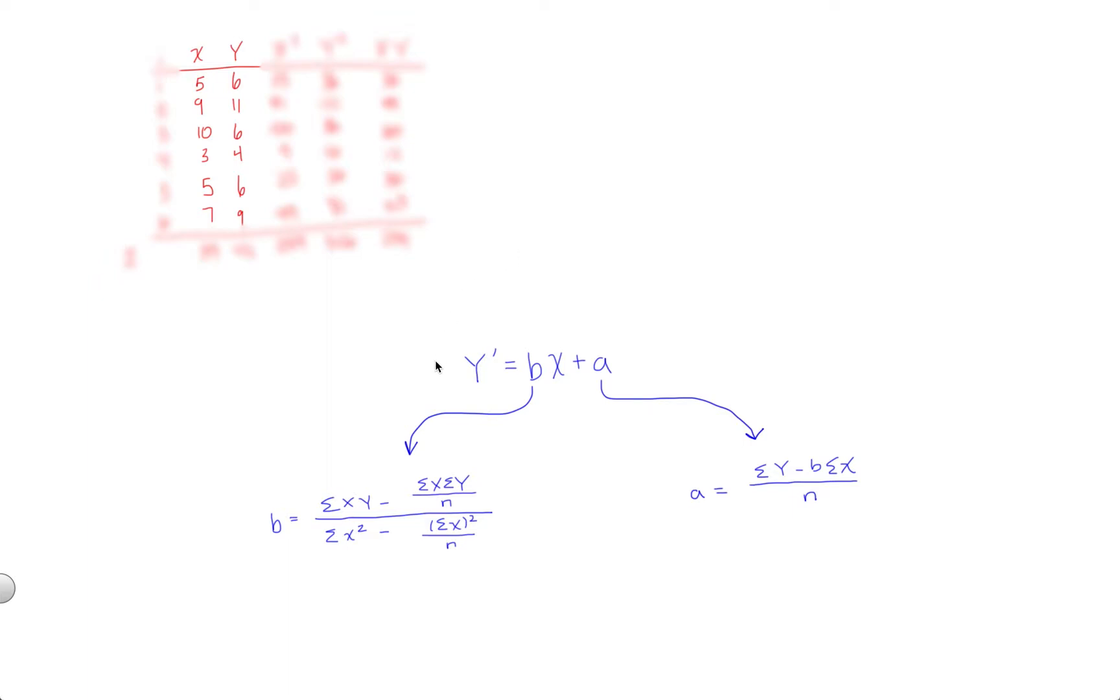In this video, we're going to go over an example of how to calculate the line of best fit for a simple linear regression. So our goal is going to be to fill out this formula here. Y prime, a person's predicted value, equals Bx plus A.